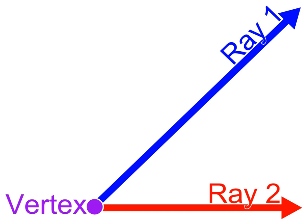Angle is also used to designate the measure of an angle or of a rotation. This measure is the ratio of the length of a circular arc to its radius. In the case of a geometric angle, the arc is centered at the vertex and delimited by the sides. In the case of a rotation, the arc is centered at the center of the rotation and delimited by any other point and its image by the rotation.